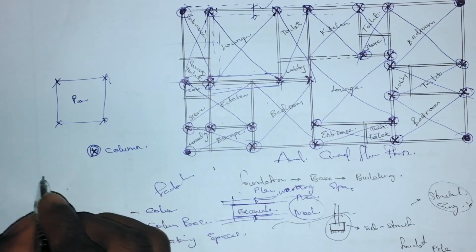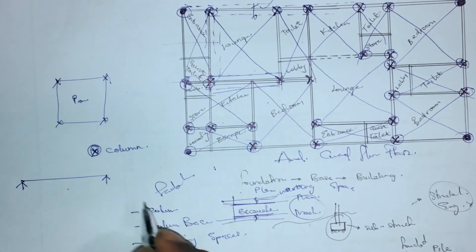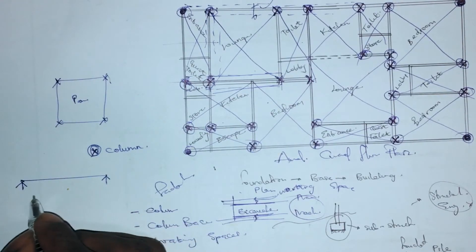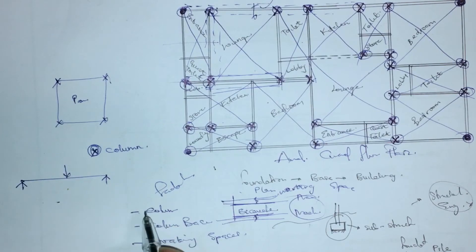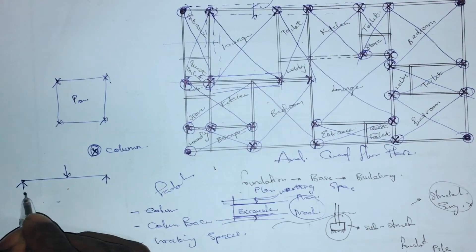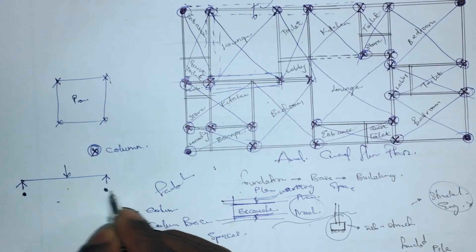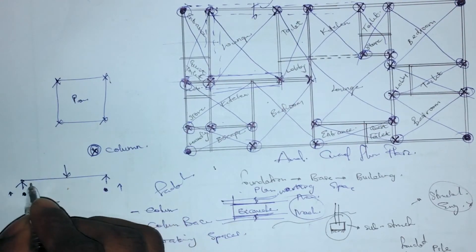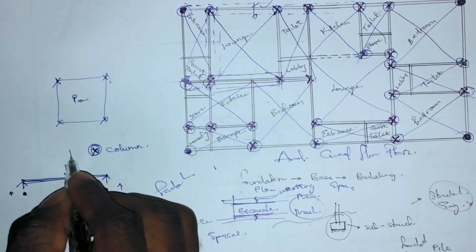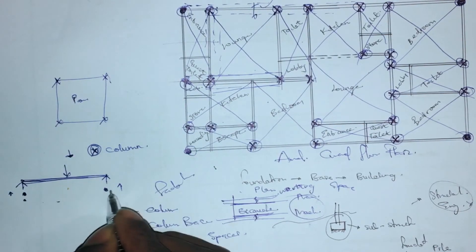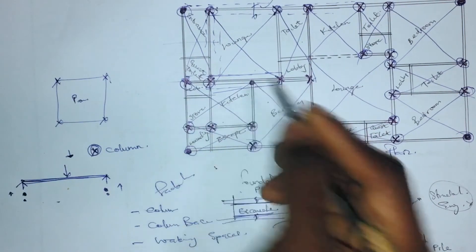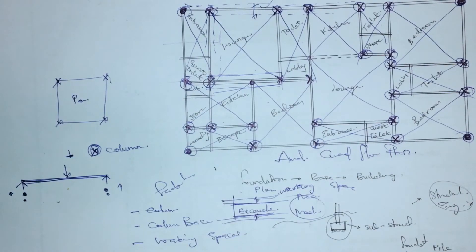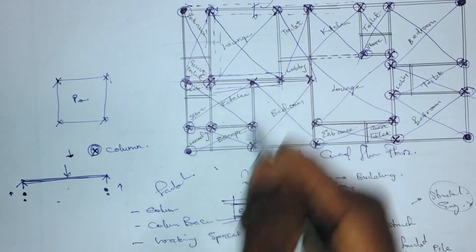Let's show it like this: if this is a simply supported beam and you have a point load here, this support is already taking the load coming down and this one is also taking the load. We can still have this load come here because we have two supports, and it's possible to put a column here too. But to make the design more economical, we can eliminate that and simplify the layout.